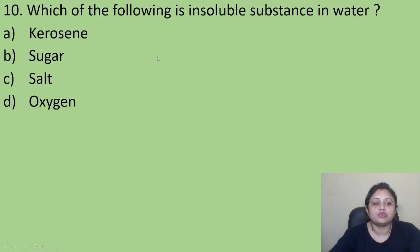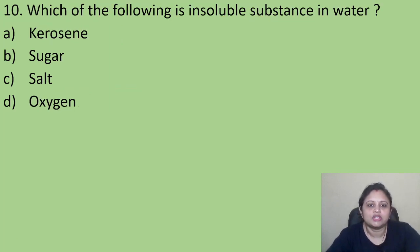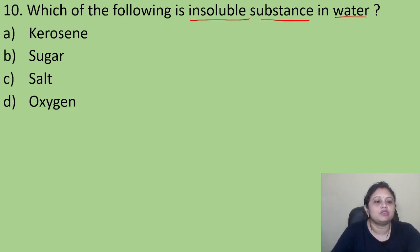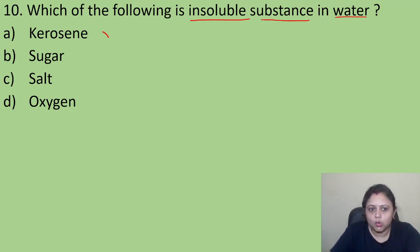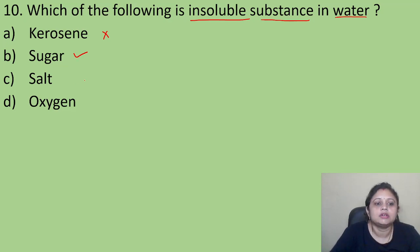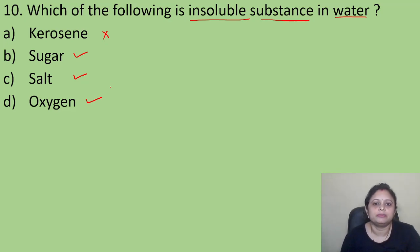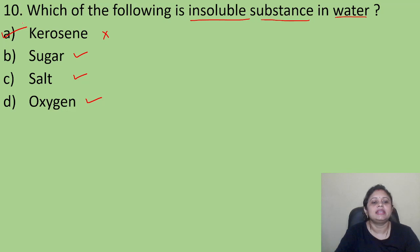Coming to the next question: which of the following is an insoluble substance in water? Option A: kerosene. Option B: sugar. Option C: salt. Option D: oxygen. Kerosene is not soluble in water. Sugar is soluble in water. Salt is also soluble in water. Oxygen is also soluble in water. So the correct answer is Option A, that is kerosene.